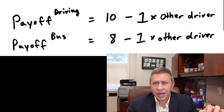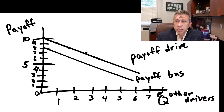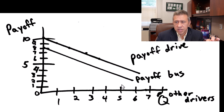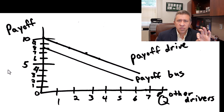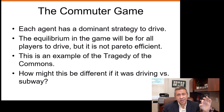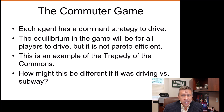We can also put this graphically. If there are no other drivers, the payoff to drive is simply 10, but for each other driver the payoff function decreases by 1 — we see this line for driving a car. Taking the bus starts at 8 and also decreases by 1. We notice for this particular example that these two lines don't ever intersect. If they don't intersect, that actually tells us something powerful: it shows us that each agent has a dominant strategy to drive a car.